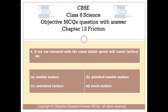Question number 4. A toy car released with the same initial speed will travel farthest on: Option A: Muddy surface. Option B: Polished marble surface. Option C: Cemented surface. Option D: Brick surface.